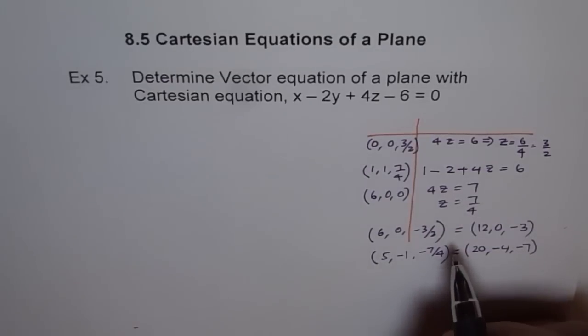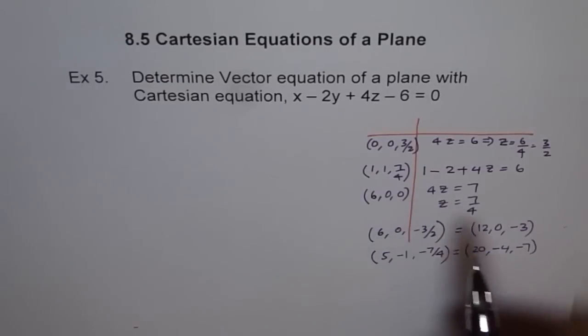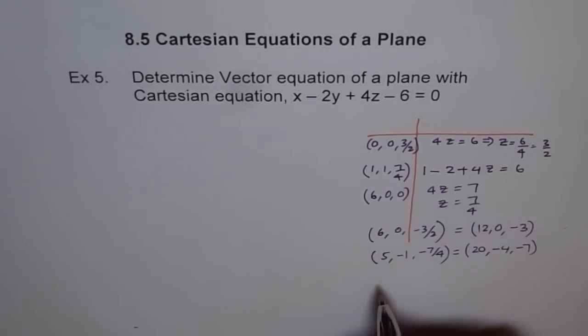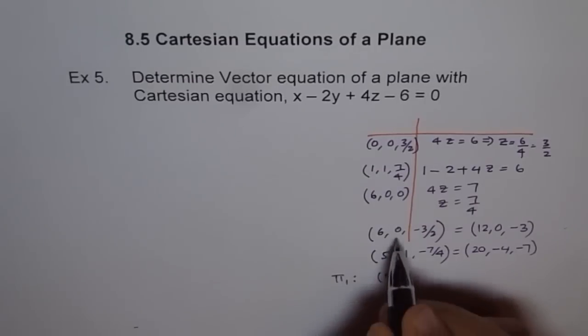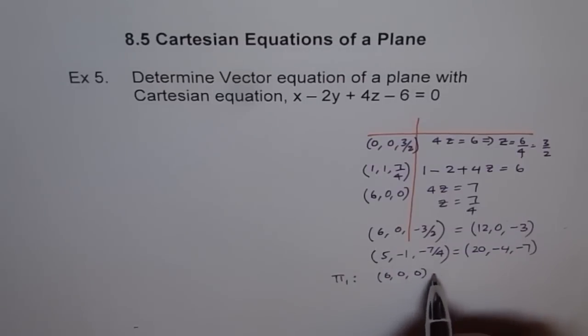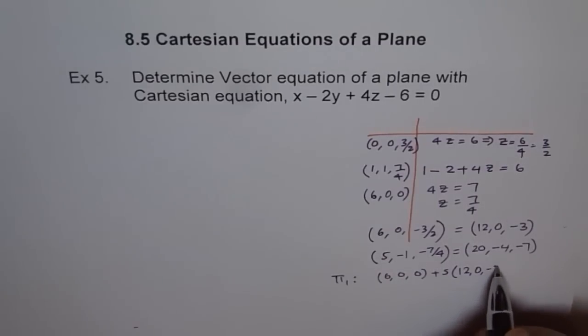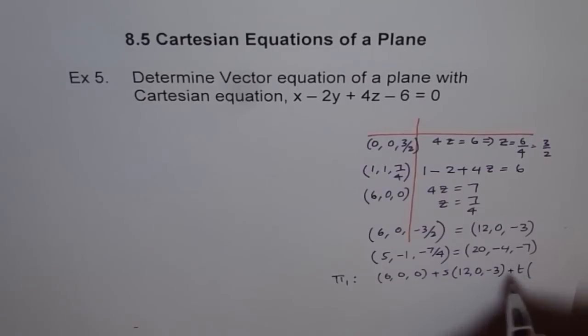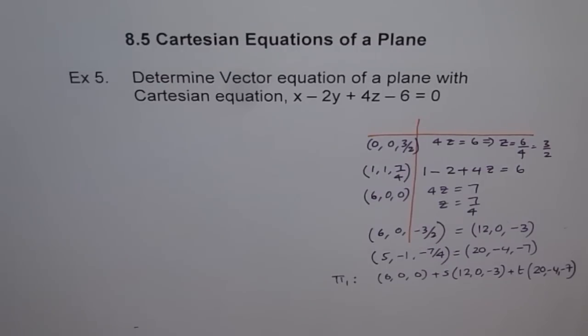These are the two direction vectors and we do have a point which we will use 6, 0, 0. That is the best point we got. So, we will use this point and say, our plane pi 1 could be written as this point 6, 0, 0 plus S times 12, 0, minus 3, plus T times 20, minus 4, minus 7. That is the first equation which we have got and the method used here was 3 points.